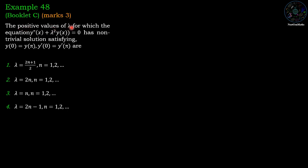The positive values of lambda for which the equation y'' + λ²y = 0 has non-trivial solution satisfying y(0) = y(π) and y'(0) = y'(π). The options are: (1) λ = (2n+1)/2, (2) λ = 2n, (3) λ = n, and (4) λ = 2n−1, for natural number n.